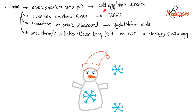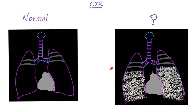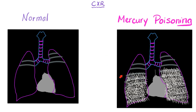To summarize the snow in medicine mnemonics: cold agglutinin disease or frostbite from shoveling snow; snowman on chest x-ray is TAPVR; snowstorm on pelvic ultrasound is hydatidiform mole; and snowstorm or snowflakes all over the lung fields on chest x-ray is mercury poisoning. Don't ever forget that snowflakes all over the lung fields means mercury poisoning.